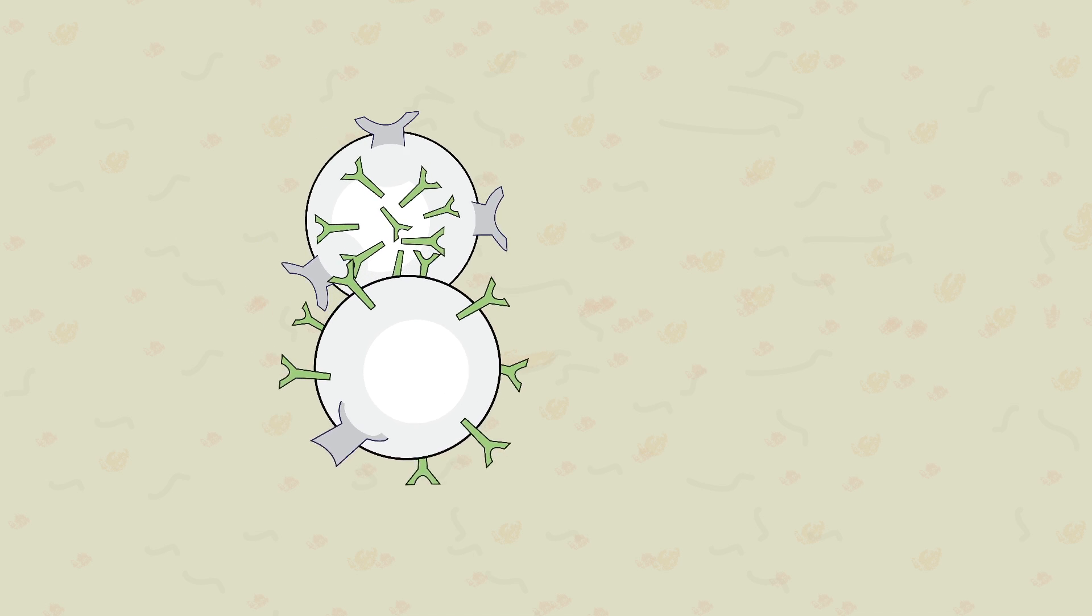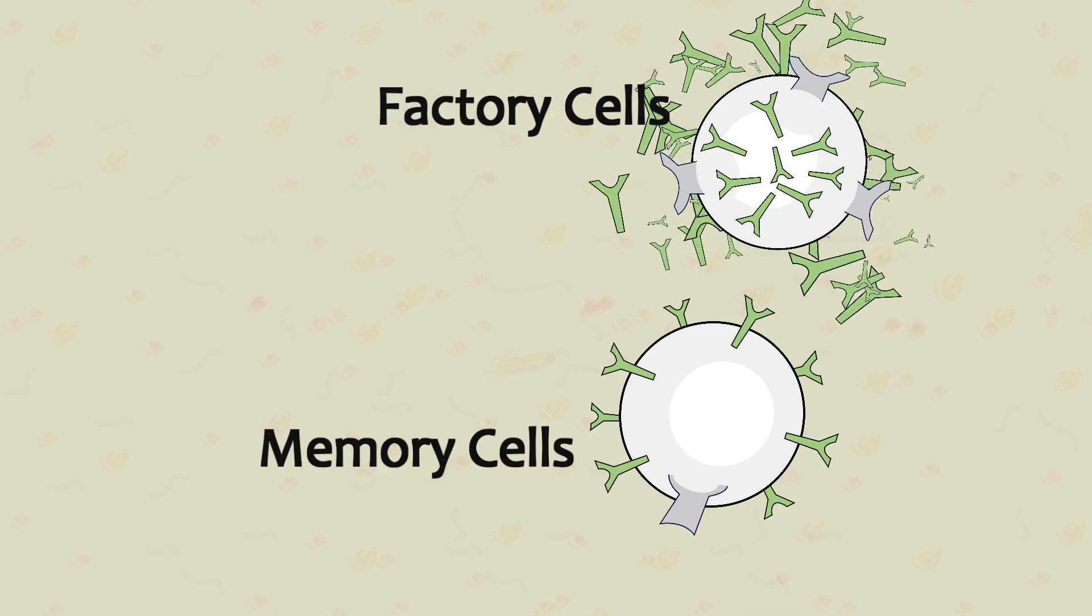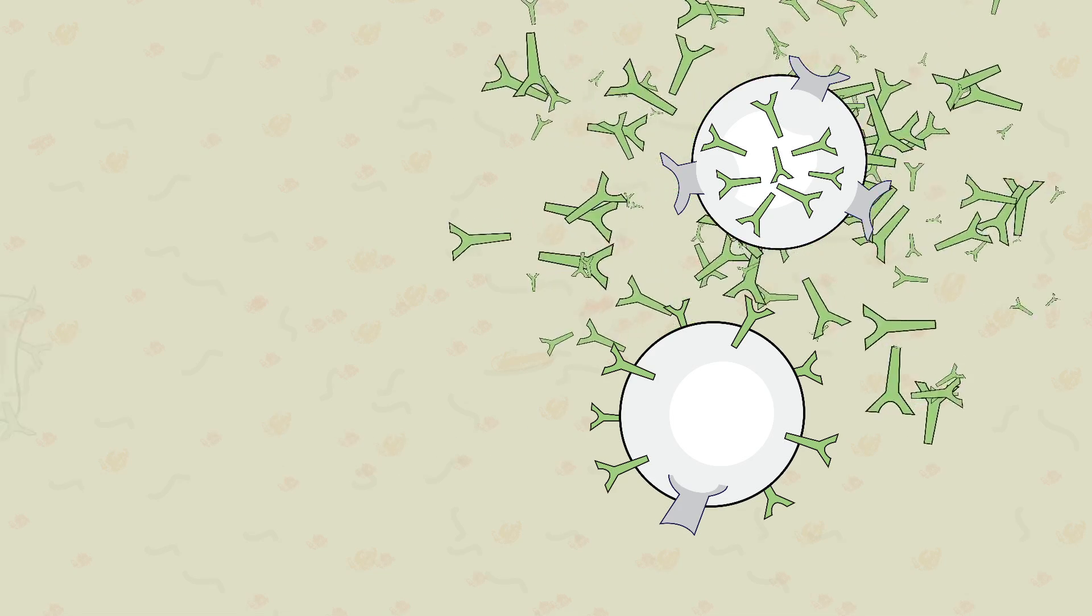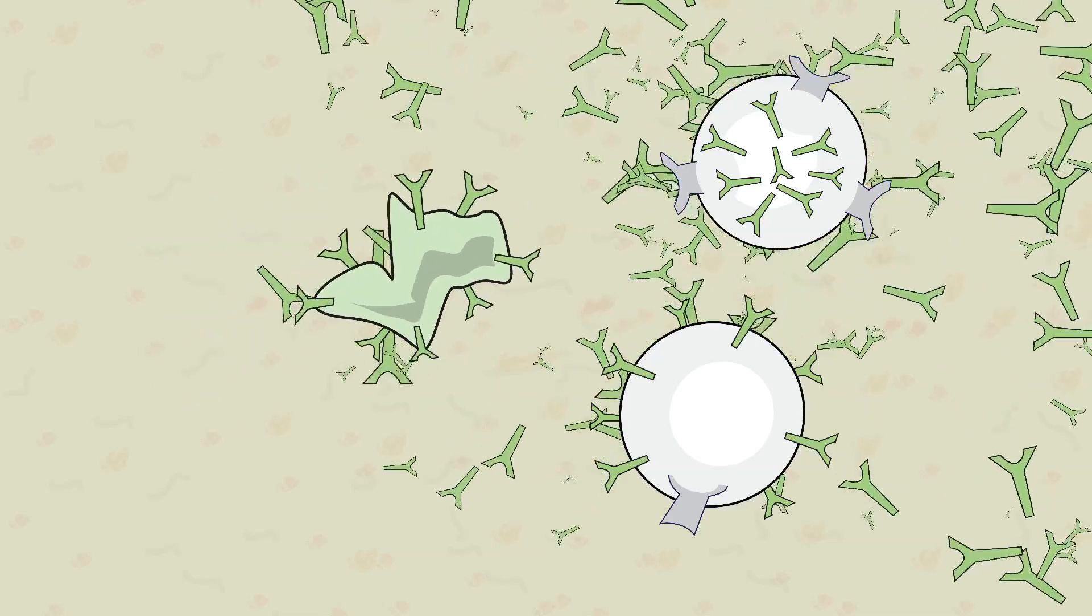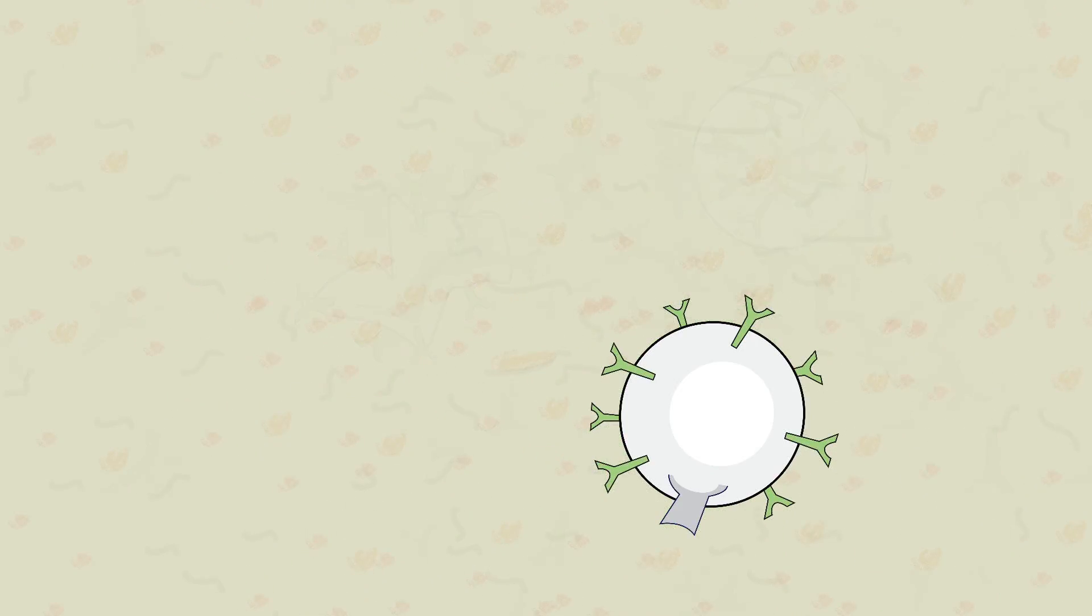When the B cell divides, it will create both factory B cells as well as memory cells. The factory B cells produce matching antibody molecules that are released into the bloodstream, searching for and binding to that specific antigen. The memory cells are clones of the B cell which retain the information about the specific antigen and circulate in the blood, providing defense for the future.